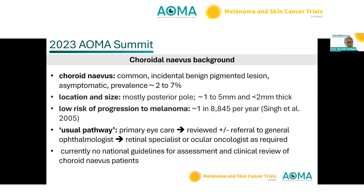They are mostly found at the posterior pole, near the macula and optic nerve. They're usually fairly small — one to five millimetres — and not really thick raised lesions. Choroidal nevi have a very low risk of progressing to melanoma, estimated at around one in nine thousand per year. In primary eye care, they'll be visualised, often with a dilated eye exam in Australia, and there may or may not be an immediate referral to an ophthalmologist, and then perhaps later to a retinal specialist or ocular oncologist.